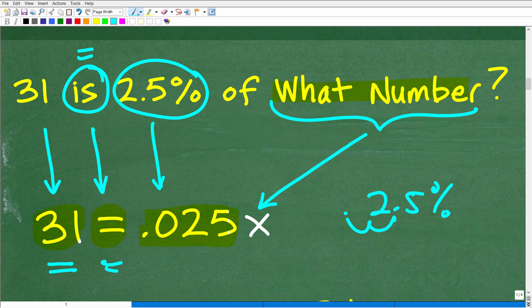All right, so we have 31 is 2.5%, which is the same thing as 0.025 of what number? Well, in algebra, when we don't know a value and we're just looking for some number, we can use a variable as a placeholder. So if we knew the number and we took 2.5% of this mystery number, I just know the answer is going to be 31. So 0.025 times this mystery number is 31. So all we need to do now is solve this lovely little basic equation.